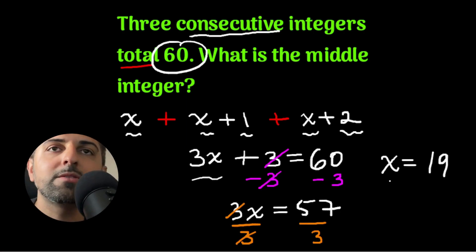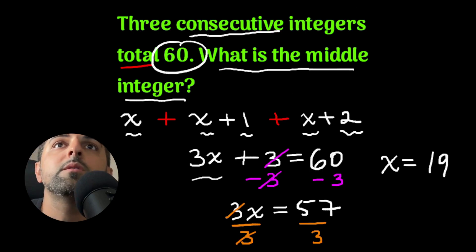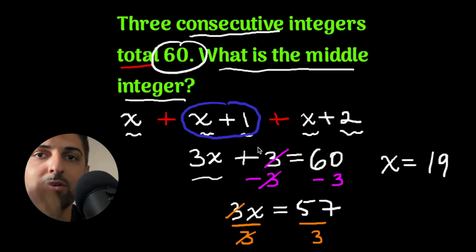But 19 is not the answer we're looking for. What are we looking for? We're looking for the middle integer. And the middle integer is the second white integer, which is x plus 1.